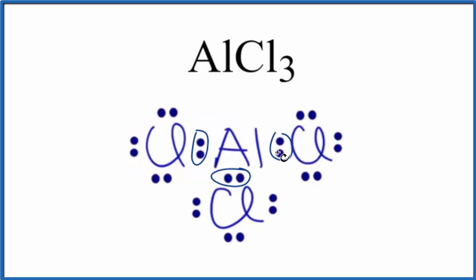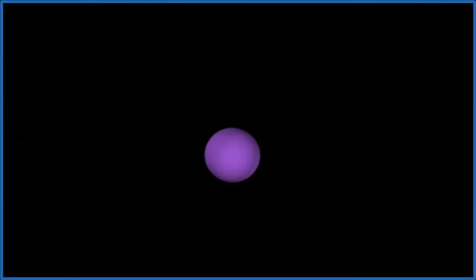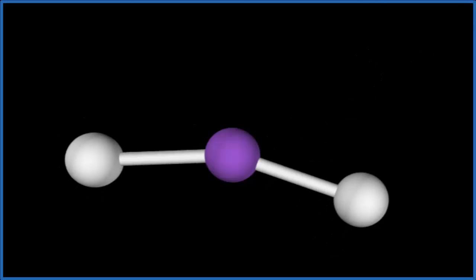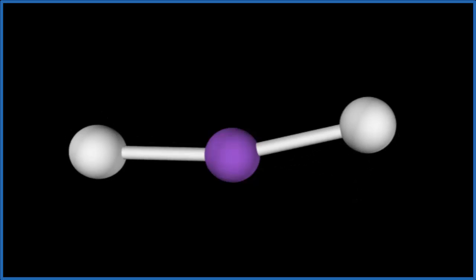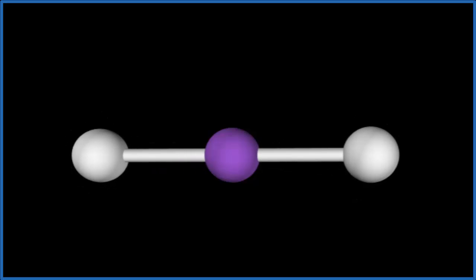What that means is these shared electrons are not going to be shared equally — they'll spend more time around the chlorine atoms. So we consider the bond to be polar, but what about the entire molecule? Let's look at a visualization. The purple is going to be our aluminum. Let's add chlorine atoms — we add one, two, and you see they spread out to be as far away as they can from each other.